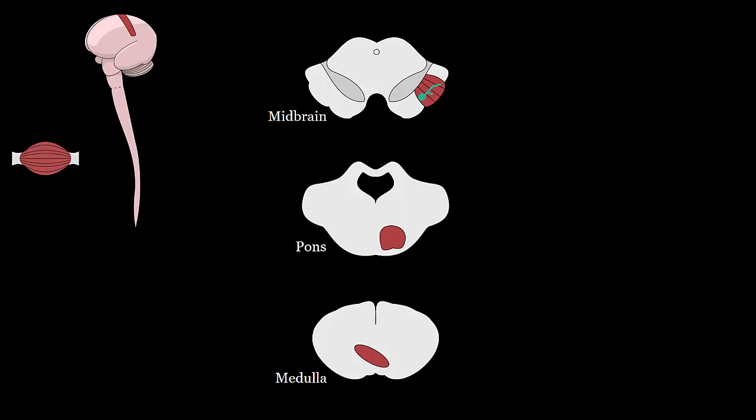Then, these fibers descend through the ventral pons. Remember that the ventral portion of the pons is supplied by pontine branches off of the basilar artery.